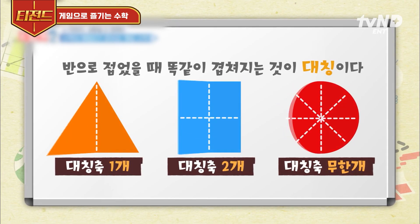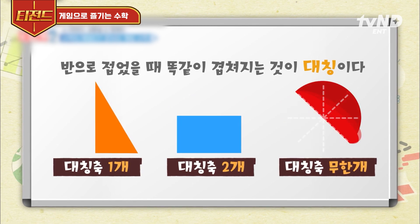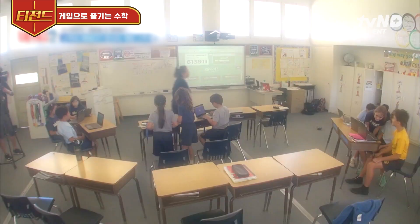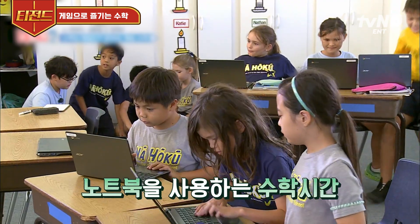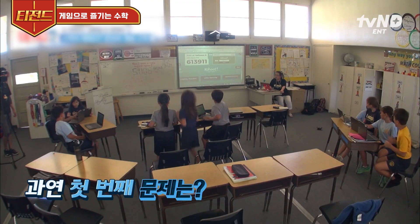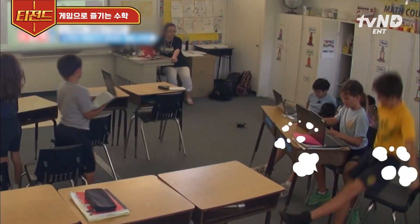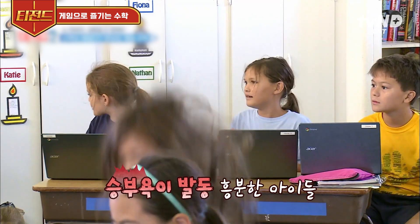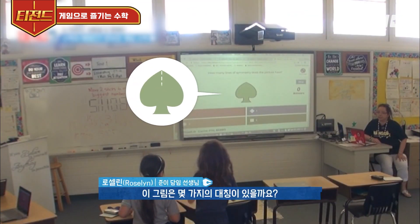이번 시간은 게임을 통해 모형의 대칭에 대해 배우는 수학 시간인데요. 대칭선의 개수를 맞추는 팀이 승리합니다. All right, let's go. We don't have much time. There we go. It's starting. Okay, fire, flip! Fire, flip! How many lines of symmetry does this have?